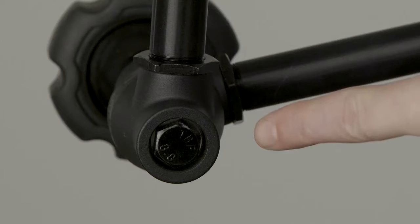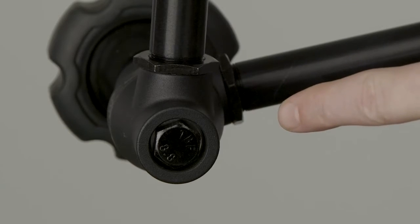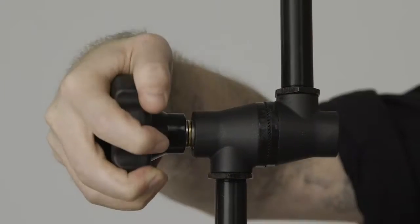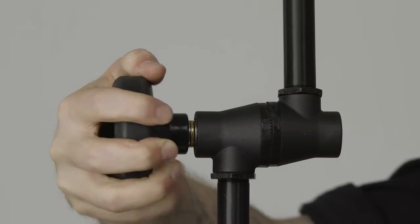In the center between the two arm segments you have an elbow joint that is secured by an oversized rubber covered hand wheel that makes it easy to crank down nice and tight.